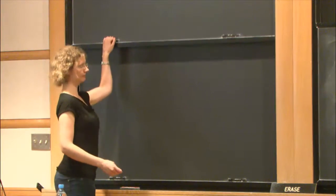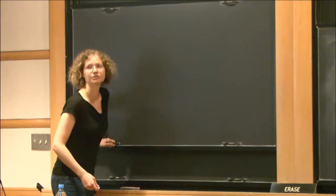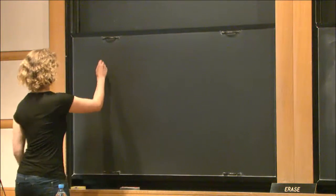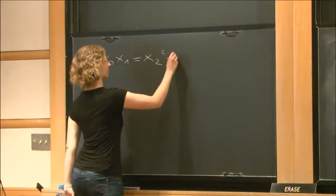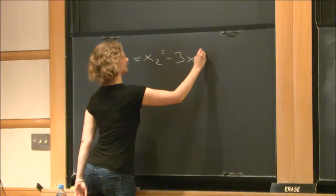I want to start with the following example which is well known and due to Birch and Swinnerton-Dyer. Let's consider the intersection of the two quadrics given by these two forms.